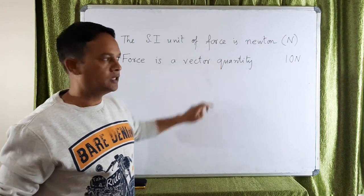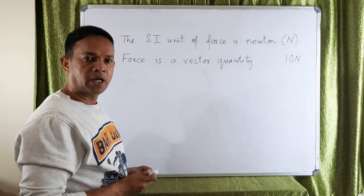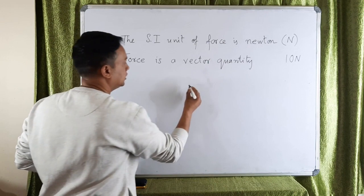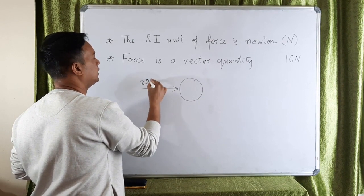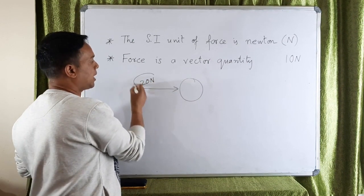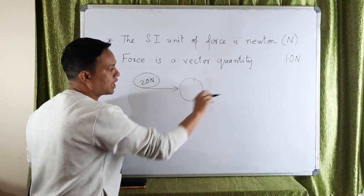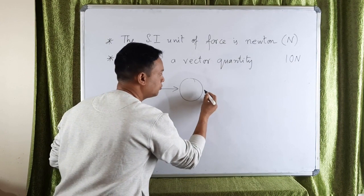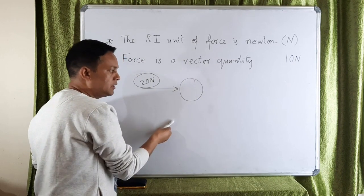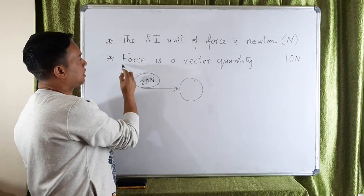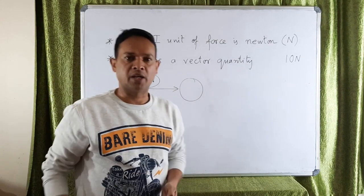The second important point is that force is a vector quantity. This means force needs both magnitude and direction to be described completely. For example, if you apply a force on a body, you must state how much force — say 20 newtons — that is the magnitude. You must also state in which direction the force is acting, since the force could act in different directions. That's why force is a vector quantity.